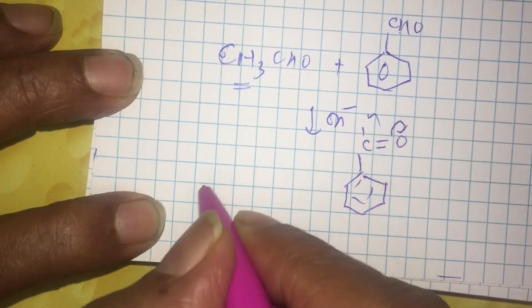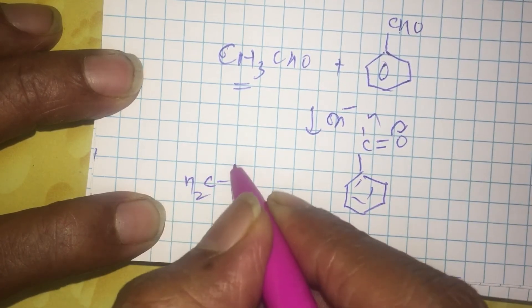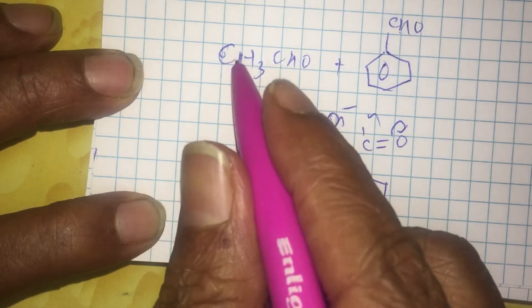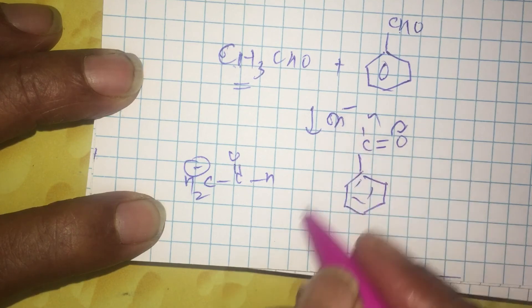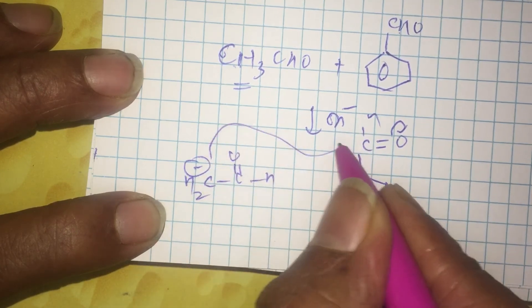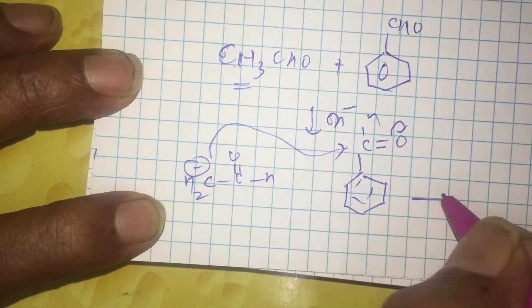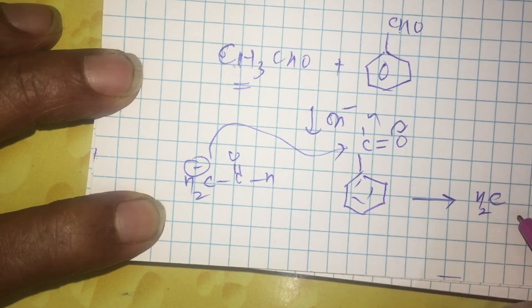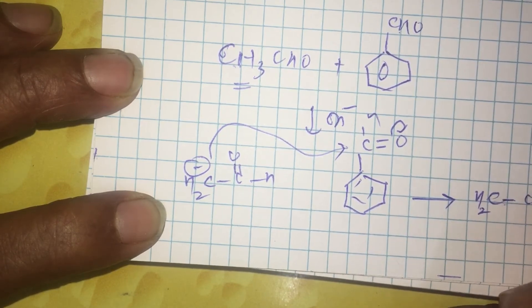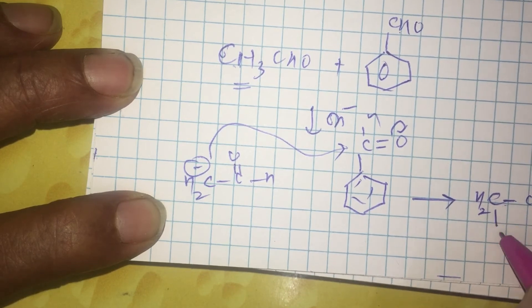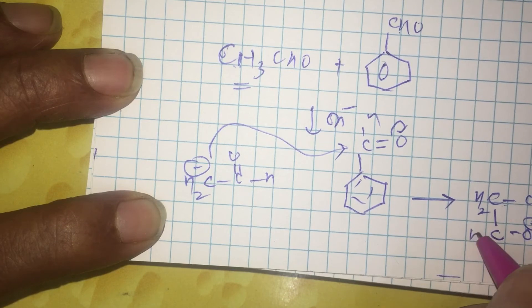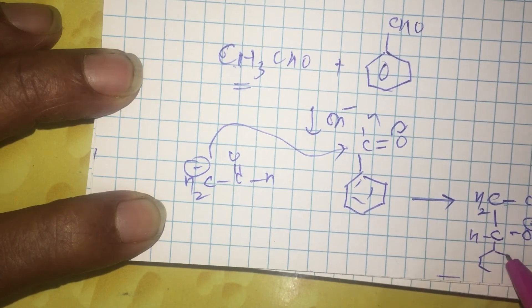This will migrate here. The carbanion resulting due to the alpha-hydrogen loss to OH- will attack here. This results in CH2-CHO. It is attacking the carbonyl carbon of benzaldehyde, O-. This is H. This is your benzaldehyde.